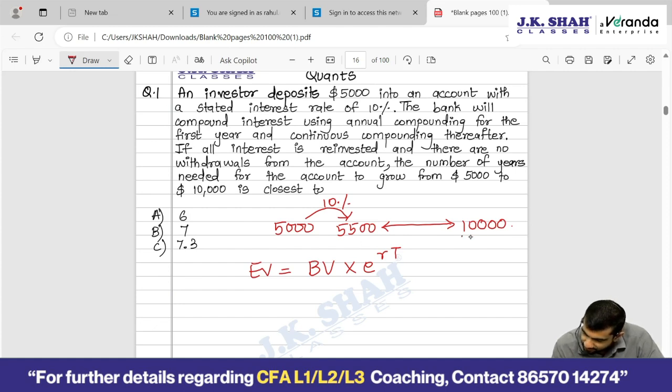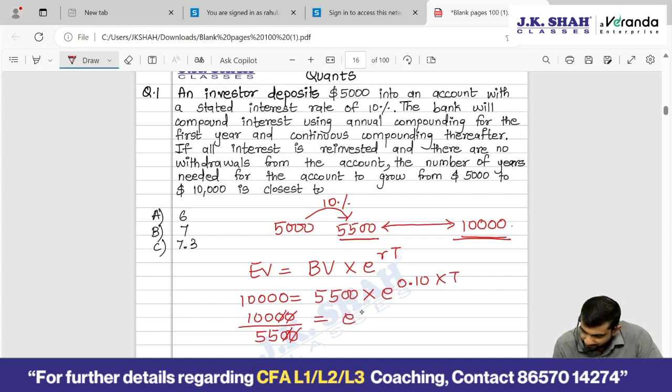Ending value is how much? 10,000. Beginning value is how much? 5,500, because we are only seeing for continuous compounding right now. So 5,500 beginning value into exponential to the power R we know, 10% is R and always consider this in decimals. T we don't know. So now little algebraic rearrangement: 10,000 divided by 5,500 equals e to the power 0.10T.